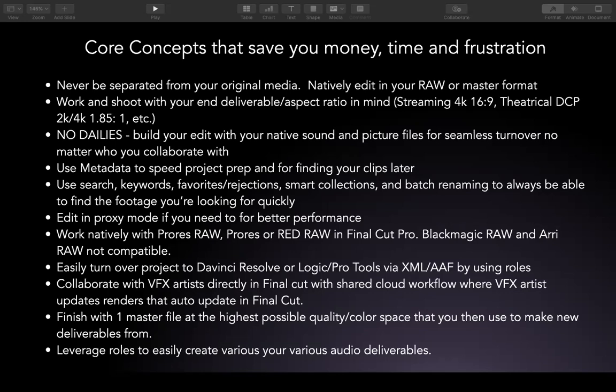Based on all the things I've talked about, here are some core concepts that can save you a lot of time, money, and aggravation. First and foremost, you never want to be separated from your original media — natively edit in your RAW or master format in Final Cut, typically ProRes RAW, RED RAW, or ProRes XQ. Ideally you'll work and shoot with your end-deliverable aspect ratio in mind. For streaming workflows that's typically 4K 16x9, or for theatrical a 1.85:1 DCP.